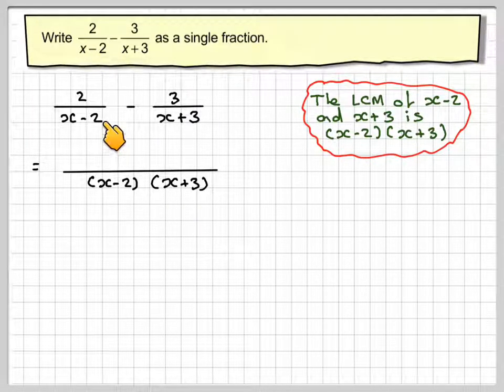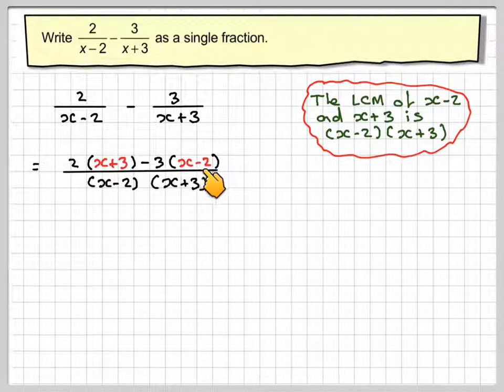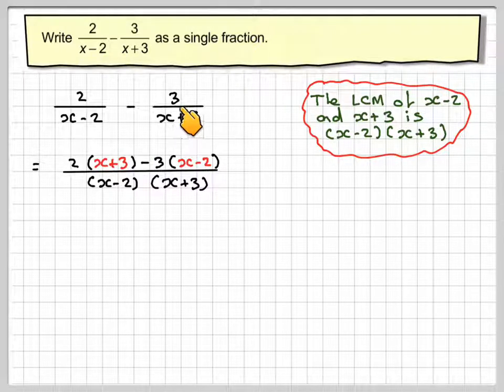Now I've multiplied this by x plus 3, so I must do the same up here. So I'm going to have 2 brackets x plus 3 minus 3 times x minus 2. Because I've multiplied this by x minus 2, I must do the same here to the numerator.